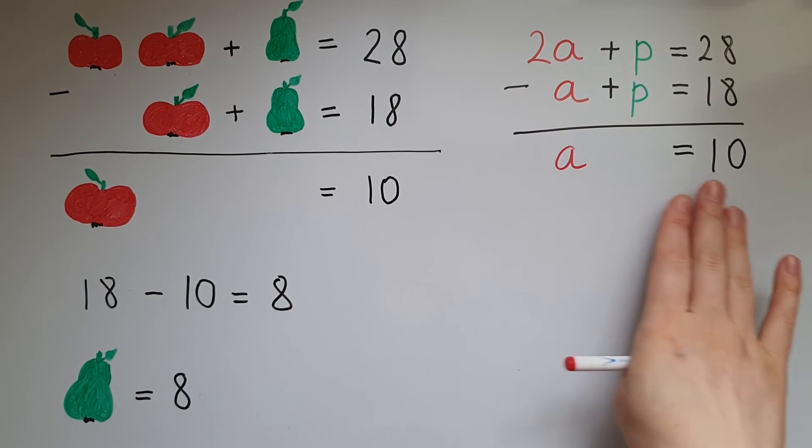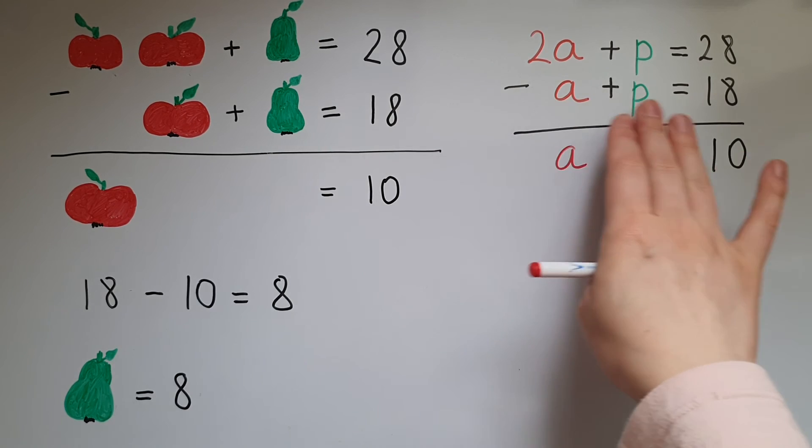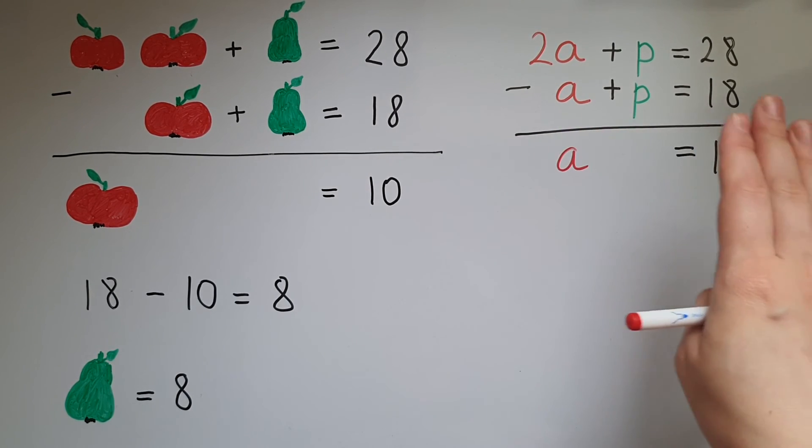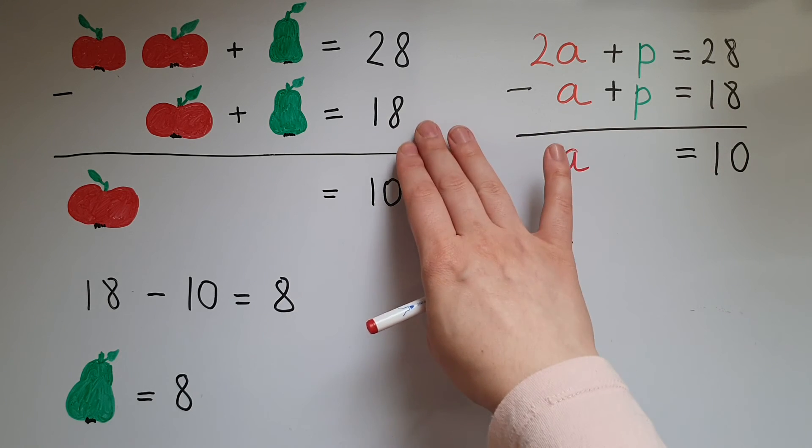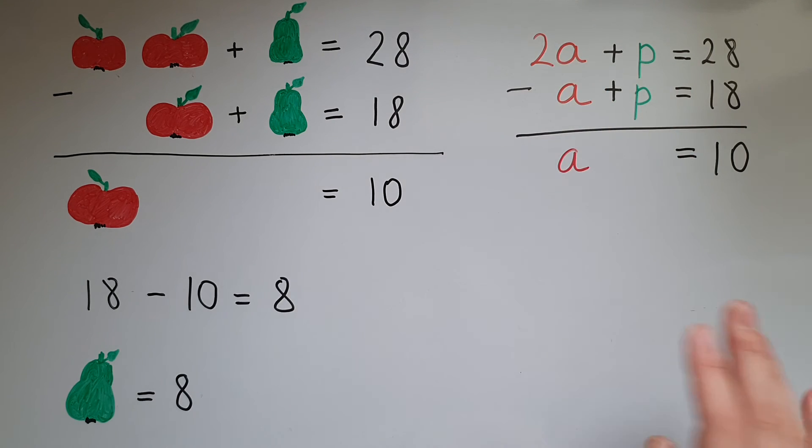So once we have a, we can just plug it into any of the linear equations, either the first or the second one. I've chosen the second one. I'm going to try now with the first one to show you that it's exactly the same thing. So a is equal to 10, 2 times 10 is 20.